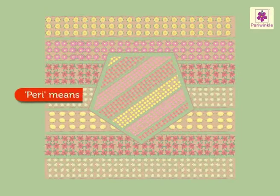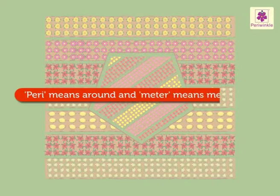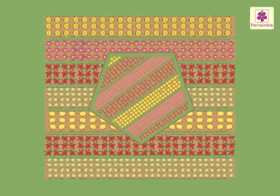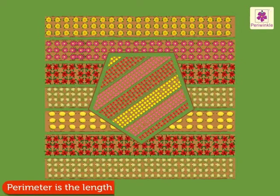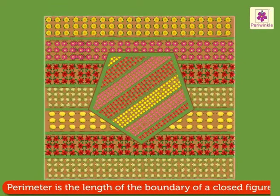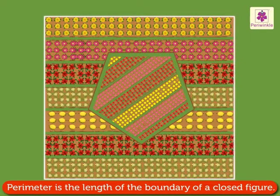Peri means around and meter means measure. Thus, perimeter is the length of the boundary of a closed figure.